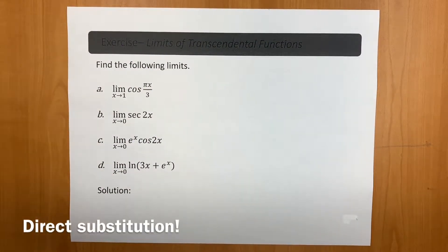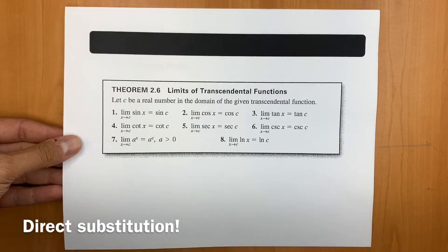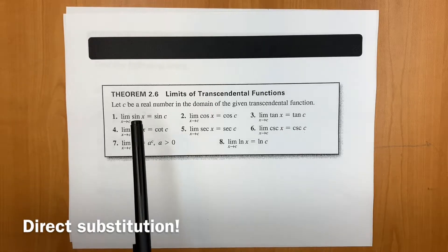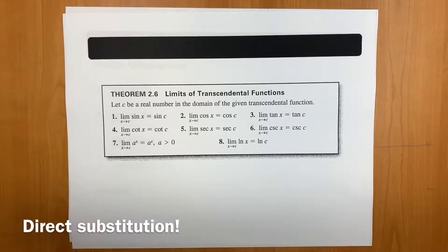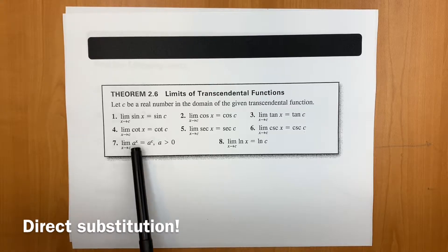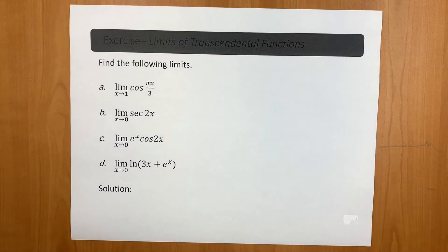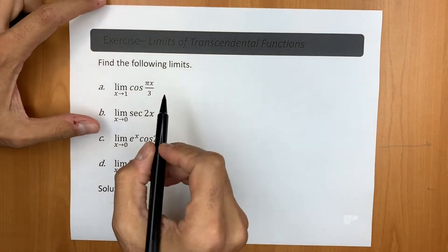Hello, welcome back. In this video I'm going to go over a few limit problems where we're going to take the limits of transcendental functions. You have some properties listed in the lecture notes — essentially if you have a trig function like sine, cosine, tan, cotangent, secant, and cosecant, direct substitution works as long as the function is defined at the limit point. Similarly, for exponential and logarithmic functions, direct substitution works perfectly.